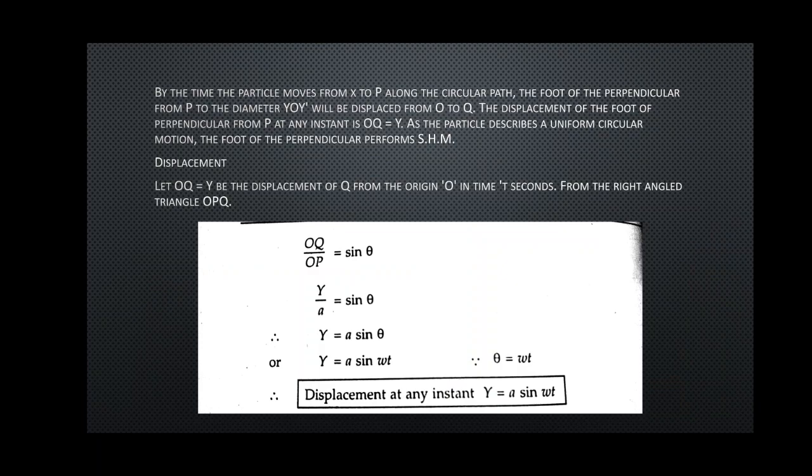The final formula is Y = A sin(ωt). This equation represents the displacement of a particle executing SHM. For your syllabus, you have the formula for displacement only — it is not necessary to derive velocity and acceleration.